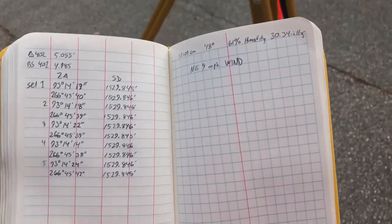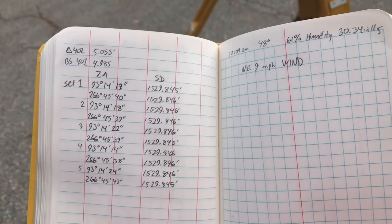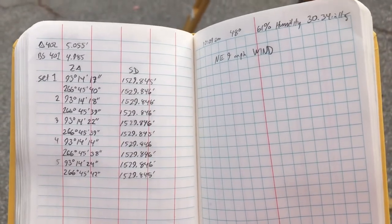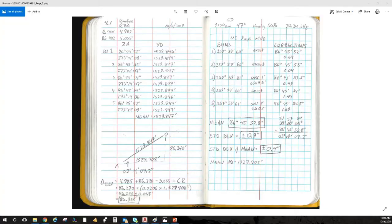I am at 402 getting ready to shoot back to 401 for repeatability. My height is 5.055. I've just finished my fourth time for this procedure. Here's my data, and here is the data.